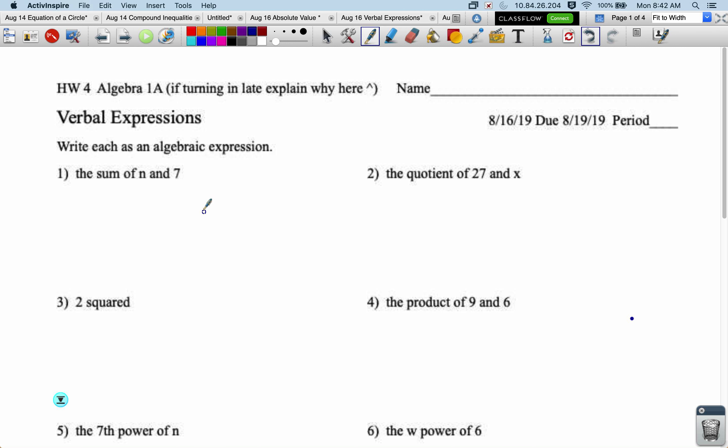So what we're doing in this homework is we're translating between what we call verbal expressions and what we call algebraic expressions. This is a verbal expression. It's the math written out in words. We want to take that and just represent it with variables and symbols.